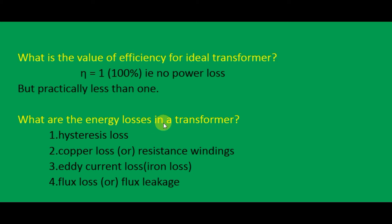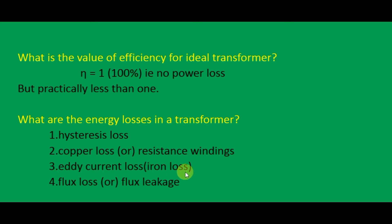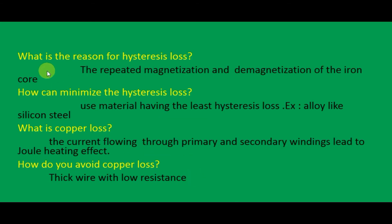What are the energy losses in a transformer? In a transformer there are some energy losses. The first one is hysteresis loss, the second one is copper loss or resistance windings, the third one is eddy current loss or iron loss, and the fourth one is flux loss or flux leakage.